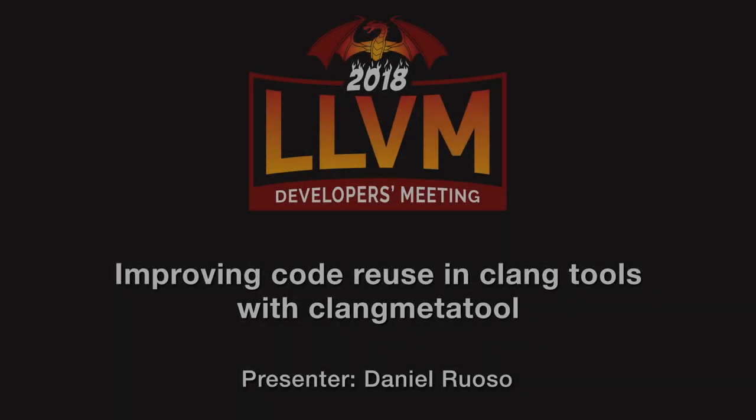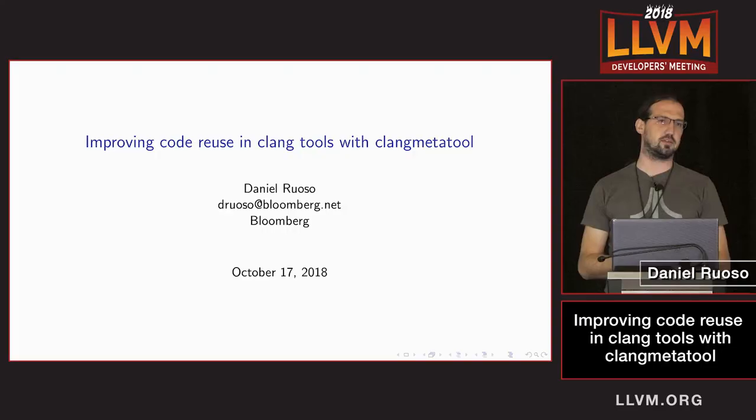My name is Daniel Rosso. I work at Bloomberg. We started about a year ago a new team focused on static analysis and automated refactoring.